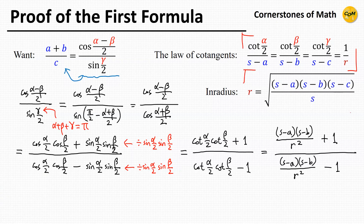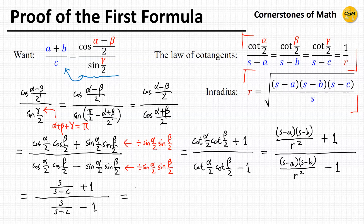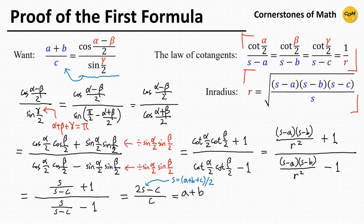Now applying the law of cotangents, we substitute cotangent(alpha/2) = (S minus A)/R and cotangent(beta/2) = (S minus B)/R, giving (S minus A)(S minus B) over R² plus 1, divided by (S minus A)(S minus B) over R² minus 1. Using the in-radius formula, this simplifies to S over (S minus C) plus 1, divided by S over (S minus C) minus 1, which simplifies to (2S minus C) over C. Using the semi-perimeter formula, we obtain (A plus B) divided by C. This concludes the proof.